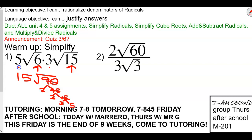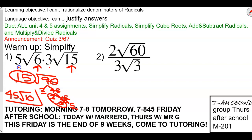Now, do I have any pairs? A pair of three. And I have an outside fifteen that's already out there. So if I have a coefficient, it multiplies with my pairs. Fifteen times three is forty-five on the outside. And then I have two loaners: two and five. Three times five — so forty-five square root of ten.